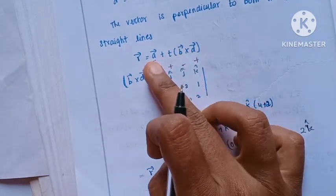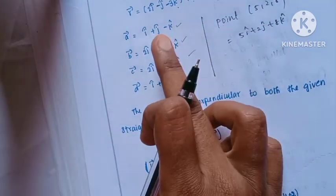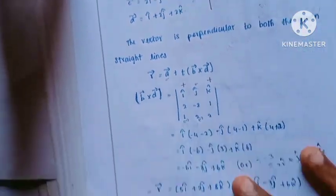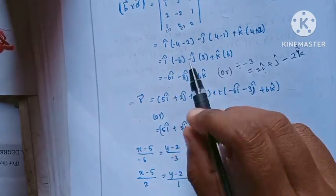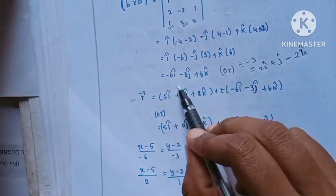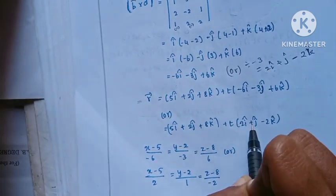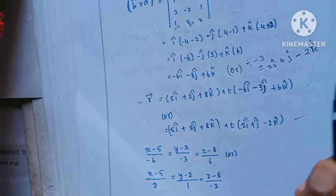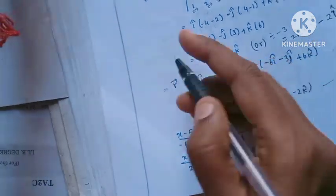So b cross d gives us the direction vector. With a-vector as the given point vector, the parametric vector equation is r-vector equal to a-vector plus t times (b cross d).